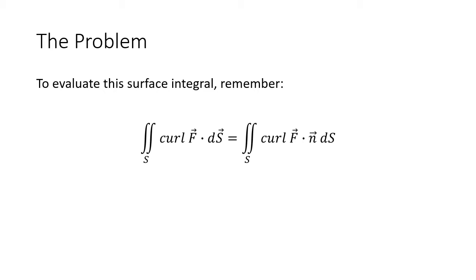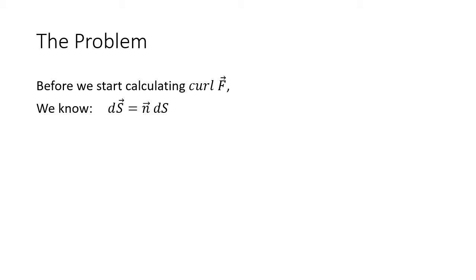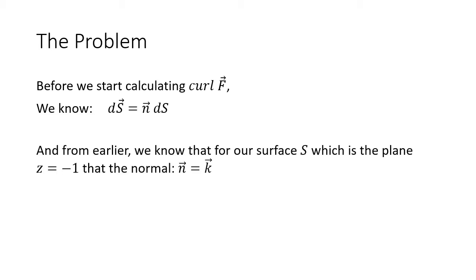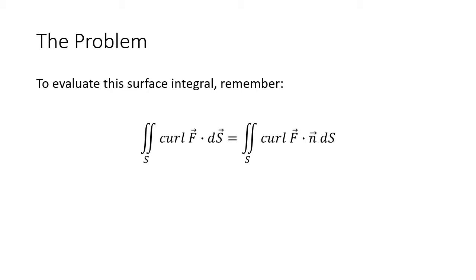Now, to actually evaluate the surface integral — we typically have the notation curl of F dot dS, but what that really means is the normal vector times ds (the scalar). So we're really going to be calculating the curl of F dot n, with respect to ds. From earlier, we knew that our surface S, the plane z equals negative one, has a normal vector that is just k-hat — not even a function, literally just k-hat. So this expression becomes the curl of F dot k-hat ds.